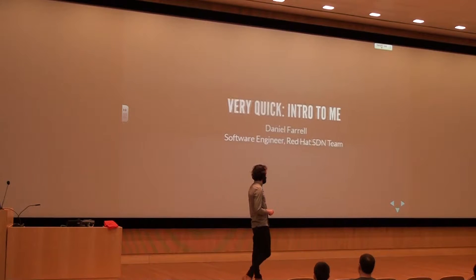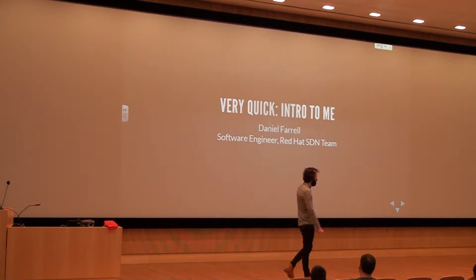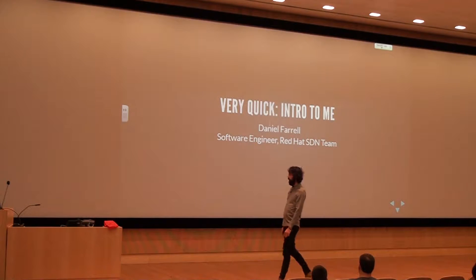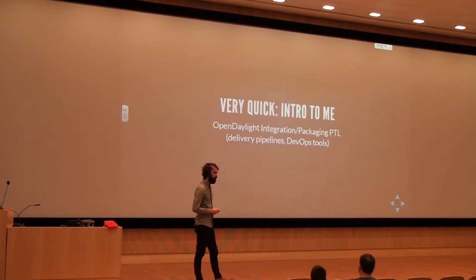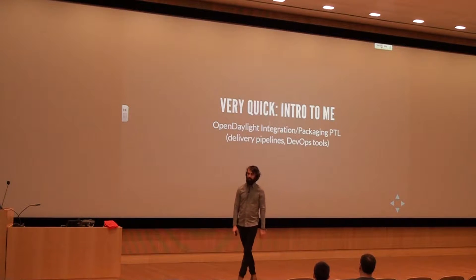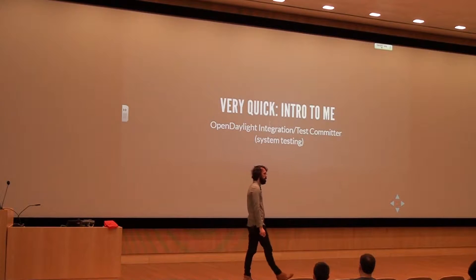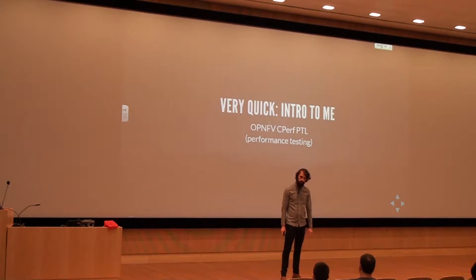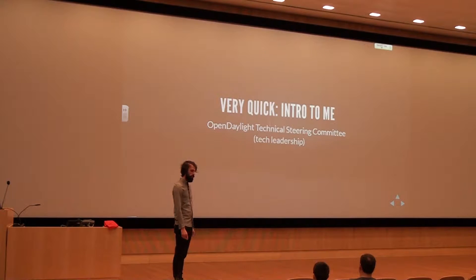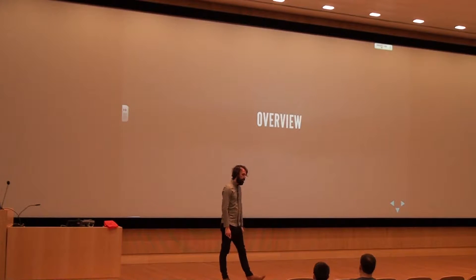My name is David O'Farrell. I'm on Red Hat's software-defined networking team — that's what SDN stands for. We're not going to get into the nitty-gritty details of that, which is what I normally give talks about all over the world. We'll talk later about why you should be a software engineer. Things I've done with my degree: I'm a lead and project technical lead of the integration packaging project in OpenDaylight. It involves DevOps tools and delivery pipelines. I also do performance testing work for OPFE — Open Platform for Network Function Virtualization — and I'm on the technical steering committee, which is how we organize leadership in open source communities.